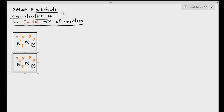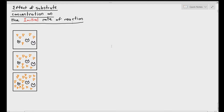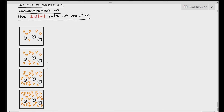We will be conducting four different experiments simultaneously. In the first box, there are three enzymes and a low concentration of substrates. In the second box, it has the same concentration of enzymes but slightly more substrates. Third box has the same concentration of enzymes with even more substrates. And in the fourth box, it has the same concentration of enzymes but the highest concentration of substrates.